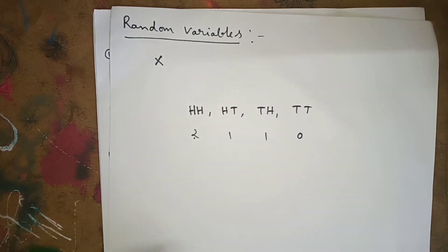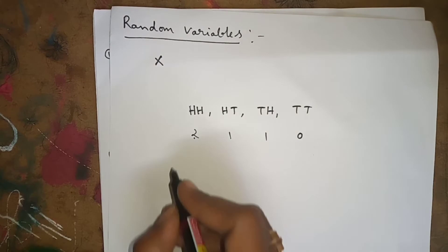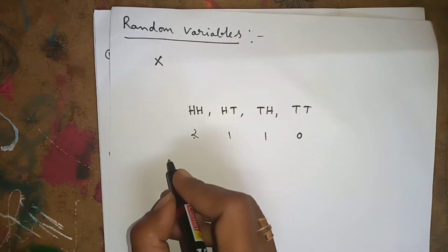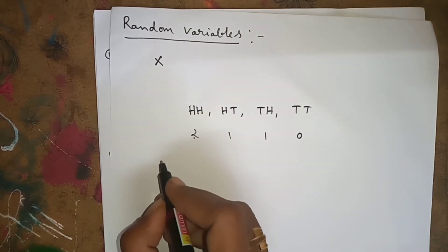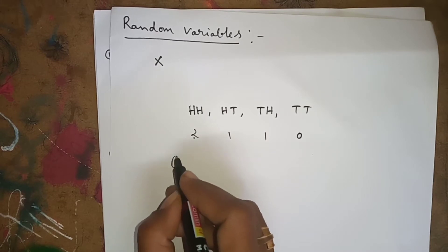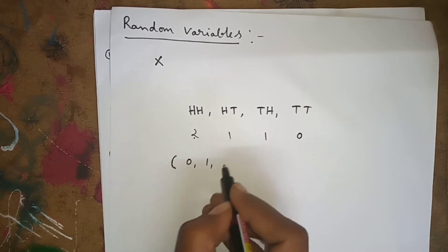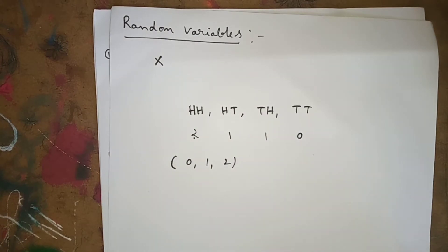The example is tossing a coin two times. Consider the random variable which is the number of heads. How many heads have we got? Zero, one, or two. That means zero heads, one head, two heads.